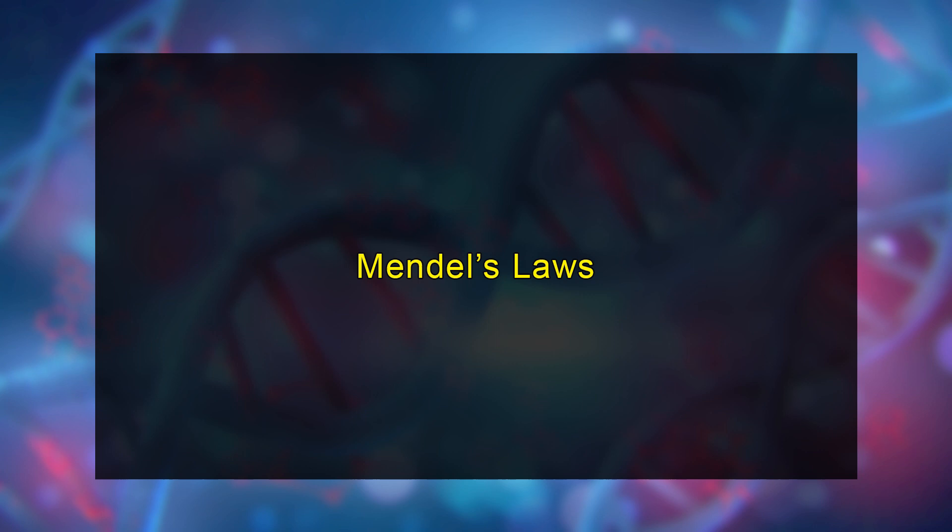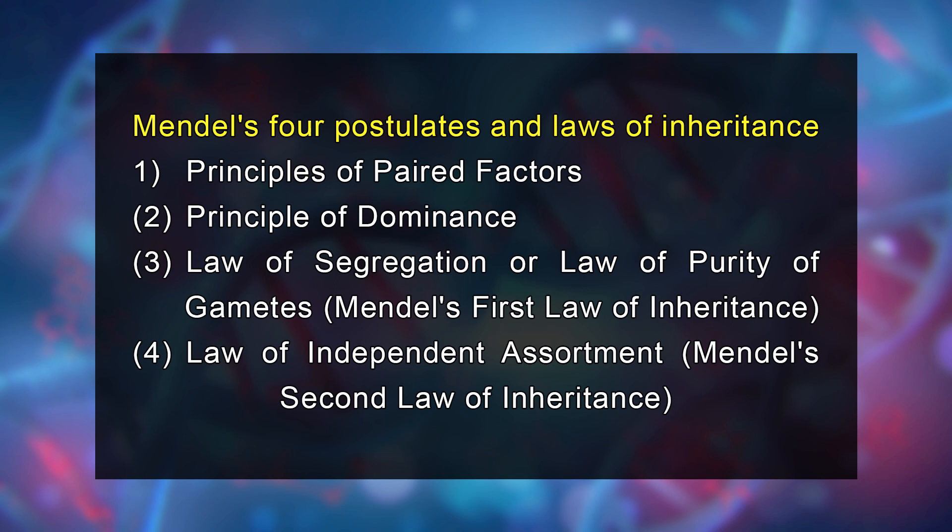Let's now discuss Mendel's laws or Mendel's principles. Mendel's four postulates and laws of inheritance are: the first, principle of paired factors; second, principle of dominance; third, the law of segregation or law of purity of gametes, which is Mendel's first law of inheritance; and fourth, the law of independent assortment, or Mendel's second law of inheritance. However, Mendel summarized his findings in two laws: the law of segregation and the law of independent assortment.